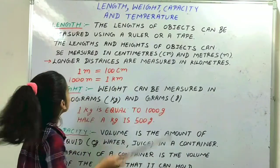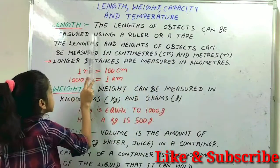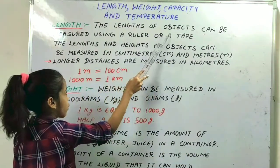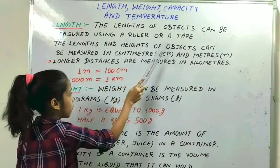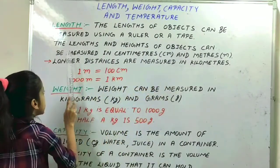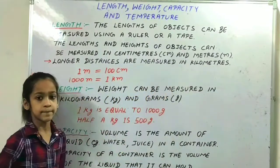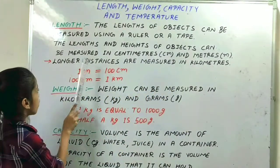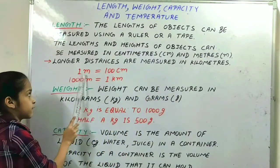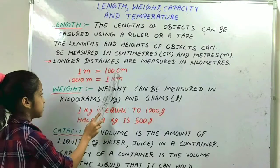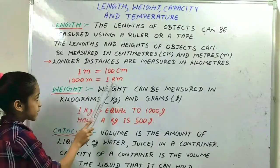First is length. The length of objects can be measured using a ruler or a tape. The lengths and heights of objects can be measured in centimeters and meters. Longer distances are measured in kilometers. So here, 1 meter is equal to 100 centimeters and 1000 meters is equal to 1 kilometer.